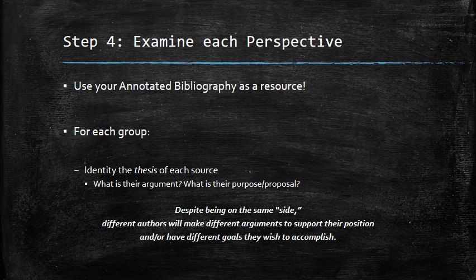Once you've organized your sources into different groups, go through and examine each perspective looking at the details. Ideally, this information is stuff you've already found and written about in your annotated bibliography. For each group, the first thing you want to do is identify the thesis of each source — what is their primary argument and what is their purpose or proposal? This is important because even though four different authors might be arguing for robot rights, they might be making different arguments: one making a legal argument, one making an economic argument, and so on, with different purposes or goals.